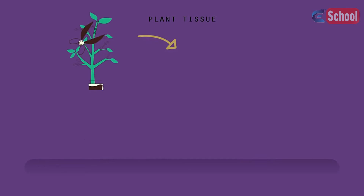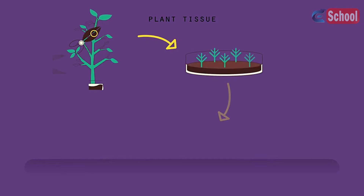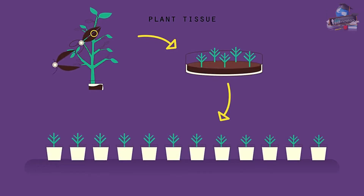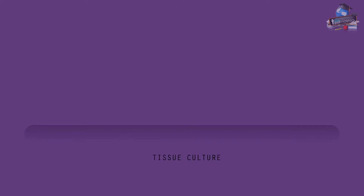However, you might want to produce hundreds of plants from only a small piece of plant tissue. To do this, another method called tissue culture, also known as micropropagation, is used.